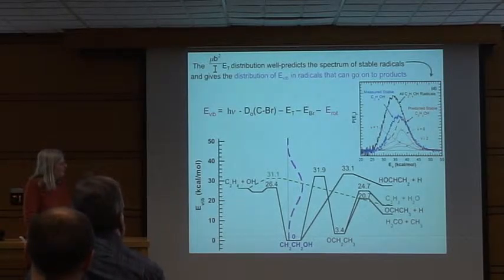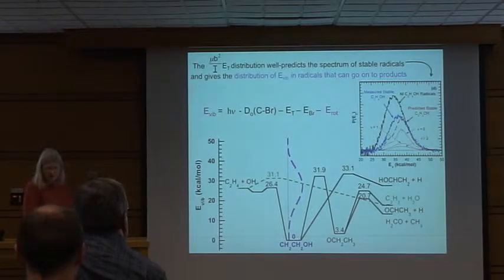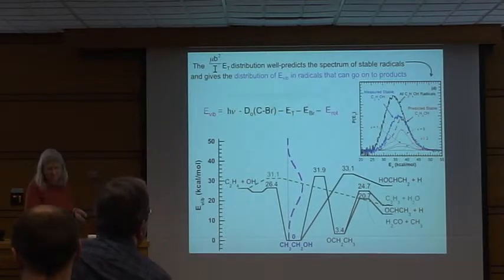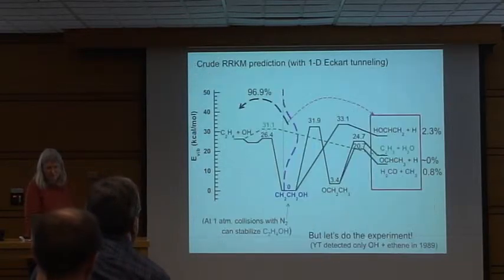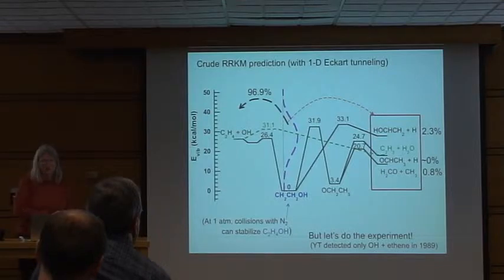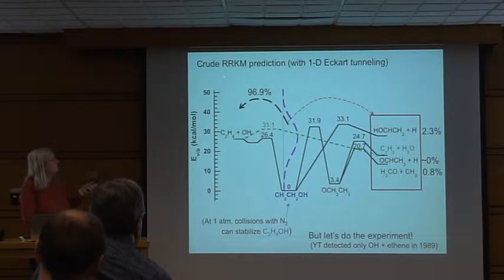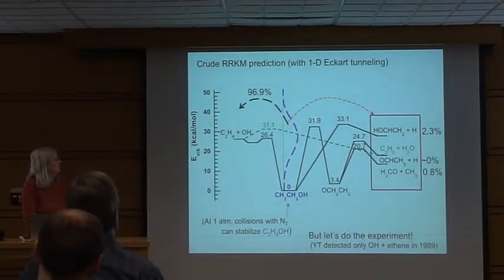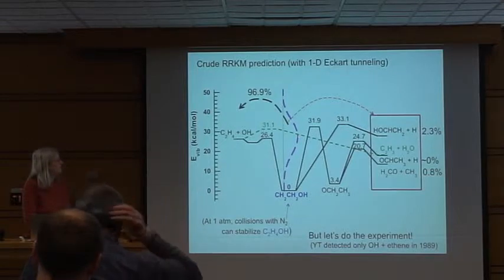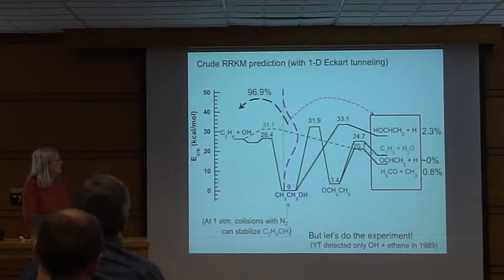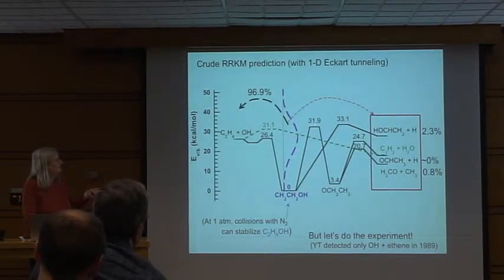What we're now going to do is look at the product channels, now that we know the energy distribution of the radicals we're making. From that internal energy distribution, we did a very crude RRKM prediction — a statistical prediction — basically counting the number of ways to arrange this molecule near each of these transition states. We don't have to worry about the denominator of the RRKM expression, the density of states, because they all have the same denominator.